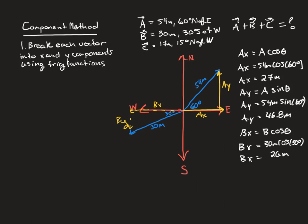We do have to be careful here — this x component is pointing to the left, which is typically the negative direction. That negative sign won't come out of your calculator, so any time you break a vector into components you need to check whether each component is in the positive or negative direction. For the y component, we use sine again since the 30 degrees is opposite to the angle. The calculator gives 15 meters, but because it's pointing down, we put a negative sign in front. Again, your calculator won't give you that — it's something you have to determine yourself.